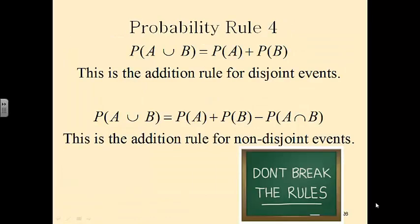Probability rule number four: if we have a union, probability of A union B, and they are disjoint — remember, disjoint means mutually exclusive — then the probability of A union B would be the probability of A plus the probability of B. Either A or B, but not happening at the same time, would be the probability of A plus the probability of B.